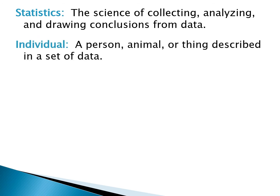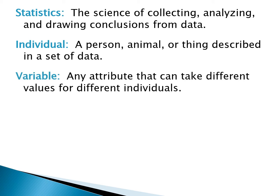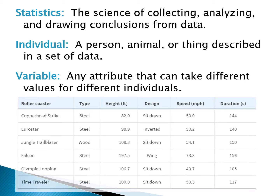When we talk about an individual, we're talking about a person, animal, or thing described in a set of data. When we talk about a variable, we're talking about any attribute that can take on different values for different individuals. For example, if we were collecting data on our class, the individuals would be the students, and the variables are the things we're collecting data on — maybe height, GPA, eye color, favorite football team, etc.